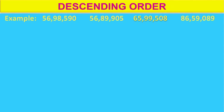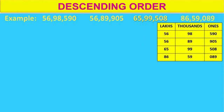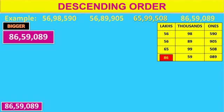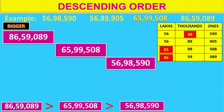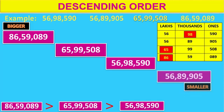What next? Descending order. Here we arrange the numbers from bigger to smaller. Count the number of digits for the given set of numbers — all the numbers have 7 digits. Let us compare the numbers according to their groups. The fourth number has more lakhs, so it comes in first place. 65,99,508 comes in second place. But the first and second numbers have the same number of lakhs, so compare the thousands group. The first number has more thousands, so it comes in third place. The second number is the smallest, so it comes at the end.